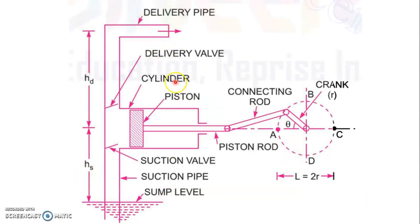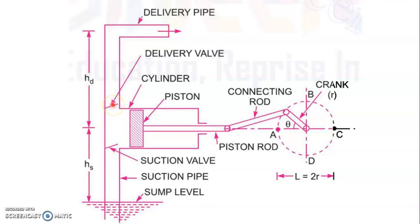This is the schematic representation of the pump from the video. The main components of a reciprocating pump — which you may be asked to draw and explain in the exam — are: a suction pipe, a delivery pipe, two non-return valves (one on the suction side, one on the delivery side), a piston, a connecting rod, and a crank. The crank is connected to the motor. When the motor rotates, the crank rotates in circular motion, which is converted into linear back-and-forth motion of the piston via the connecting rod.